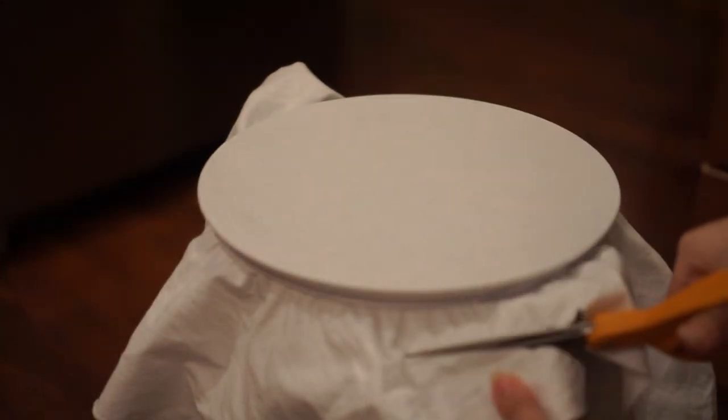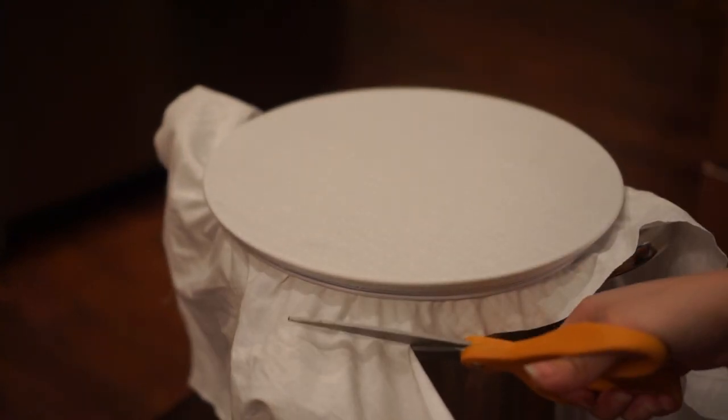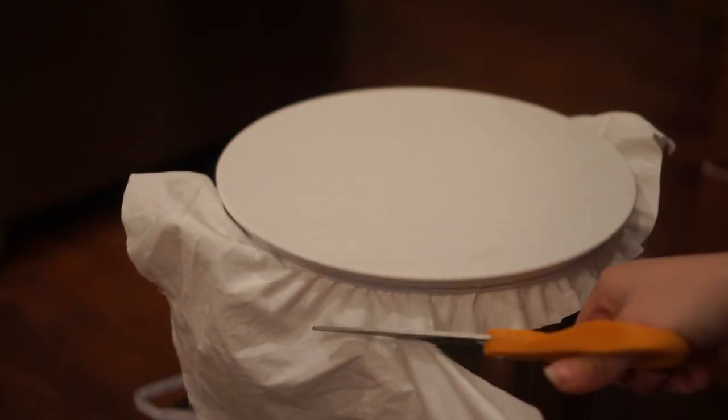Now that you have your drum, you can cut the excess fabric around the pot. You want to cut it long enough to be able to adjust and pull the cloth to tighten, but also short enough to avoid burning.